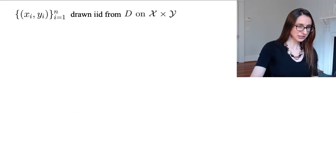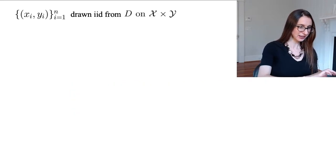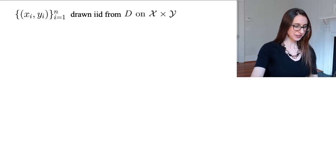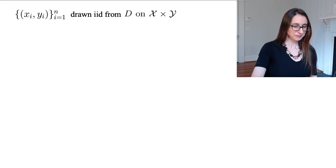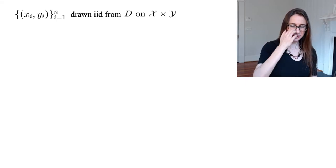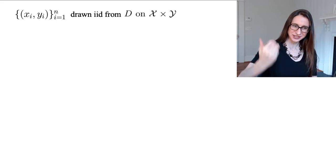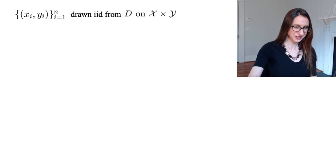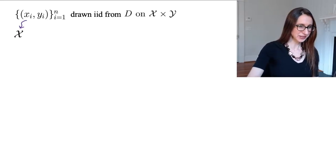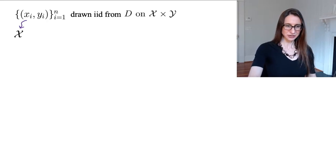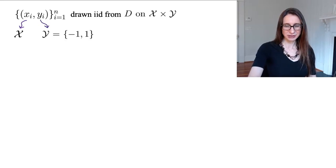Let's go over some notation. We have pairs of points drawn independent and identically distributed from a joint distribution on the set X cross Y. The X's are drawn from a set X, and the Y's are either negative one or one.